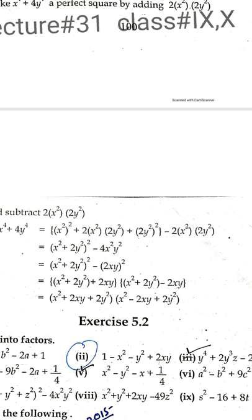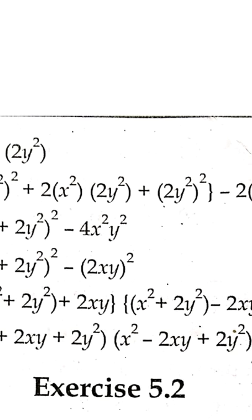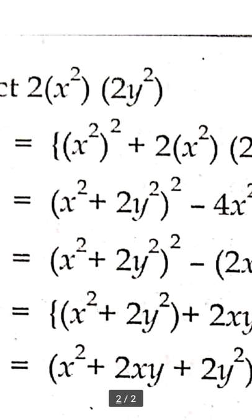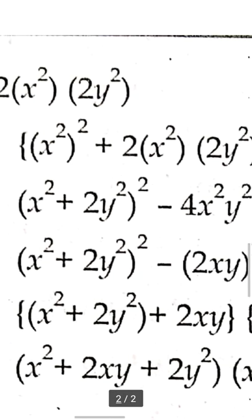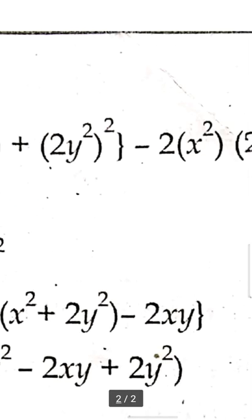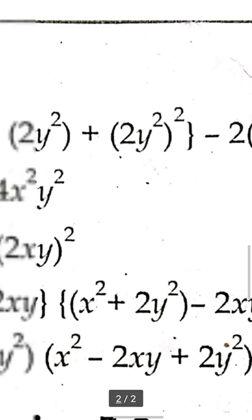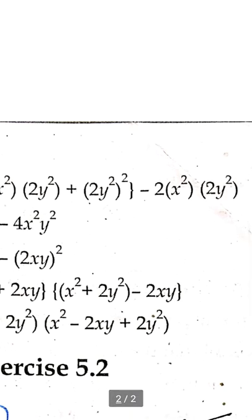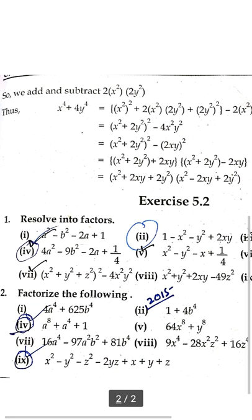So here we reduce it to a² minus b² where a equals (x² + 2y²) and b equals 2xy. This gives us (x² + 2y² + 2xy)(x² + 2y² minus 2xy), which equals (x² + 2xy + 2y²)(x² minus 2xy + 2y²). This completes exercise 5.2, example 3.